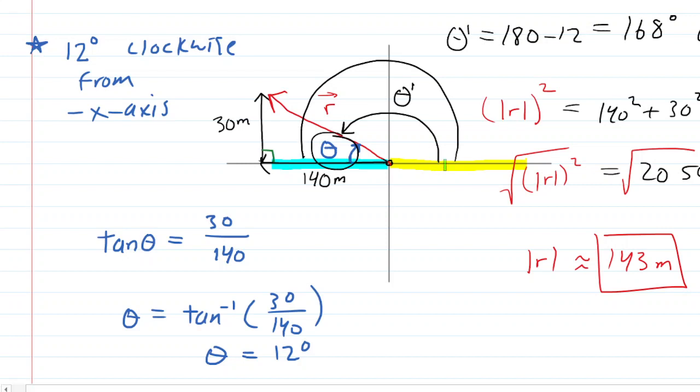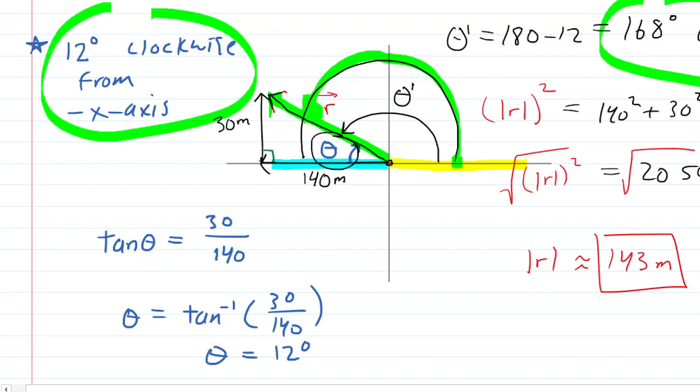That would be measured counterclockwise from the positive x axis. Just make sure that makes sense again. Start from the positive x axis right here, let's say, and then go 168 degrees. And if you did that, you would land right there. You would land right there. And that's exactly where vector r is located. And so either this form for theta or this form for theta would be acceptable.